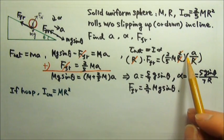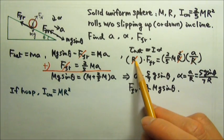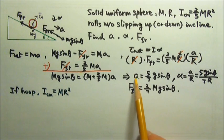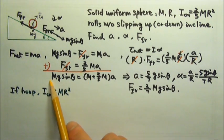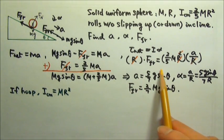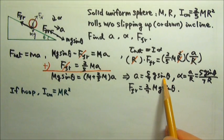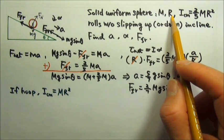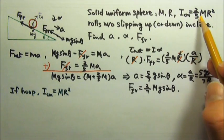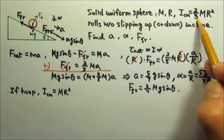Another thing is, notice how the radius canceled, and for the acceleration part, the mass also canceled. So the acceleration of the sphere has nothing to do with the mass and the radius of the sphere. But it does have to do with this 2 fifths right here.